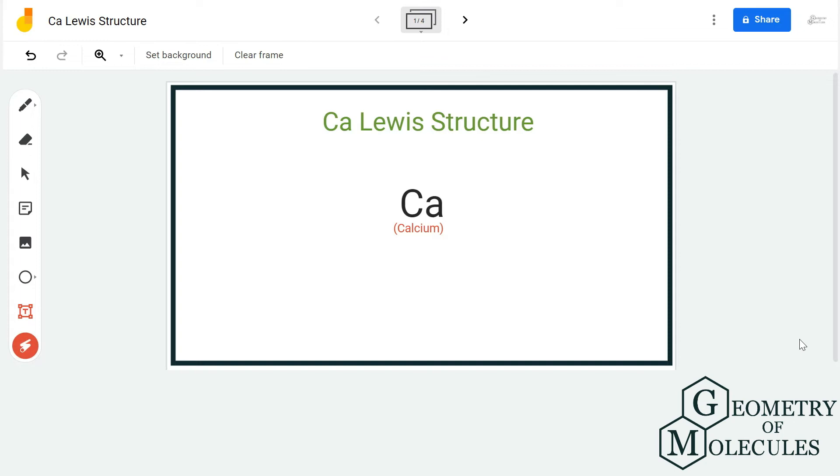Hi guys, today in this video we are going to look at the Lewis structure for calcium. CA is its element symbol and we are going to place a CA over here.